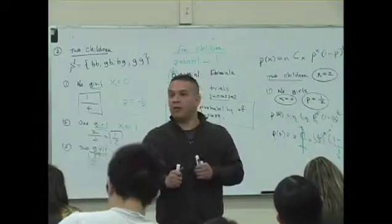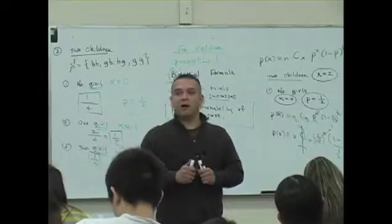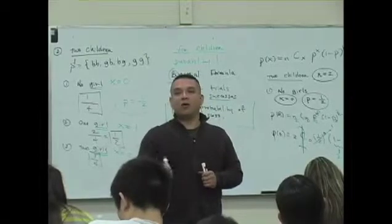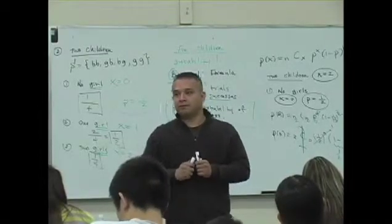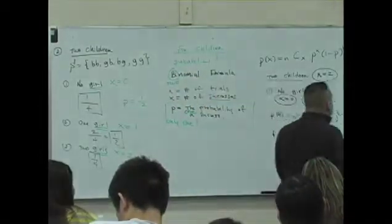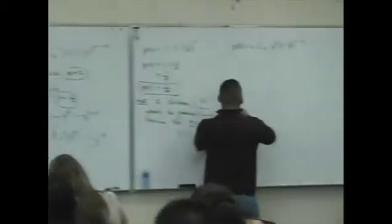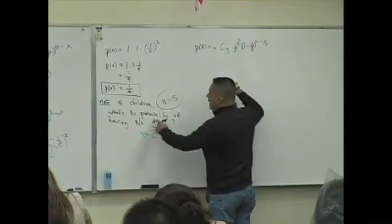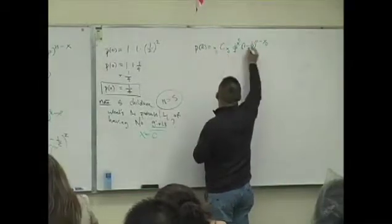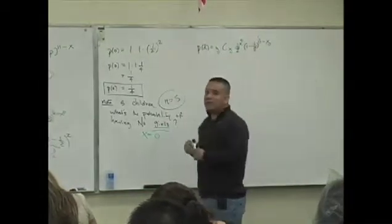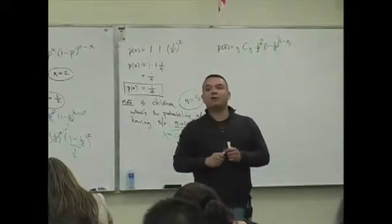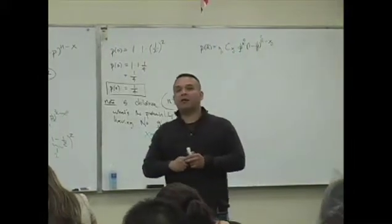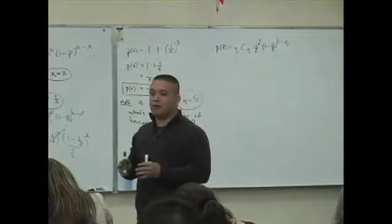This is why the binomial is used - two outcomes, a boy or a girl for a single trial. The only thing that changes here is the value of n. This is still 1/2, this is still 1/2, n is now 5. This is why we use the binomial formula - you don't want to create that sample space for 5 children, or 10 children.